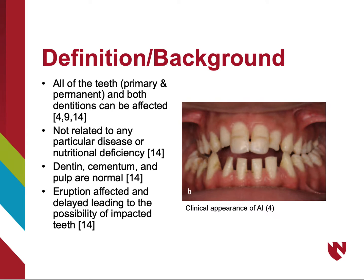All teeth, both primary and permanent, can be affected in those with AI. There has not been a connection found between any particular disease or nutritional deficiency in individuals with AI. An important finding to look for is the integrity of the dentin, cementum, and pulp, because these should appear normal as only the enamel is affected. Note how the photograph shows disruptions in the enamel, particularly notable in the maxillary central incisors.